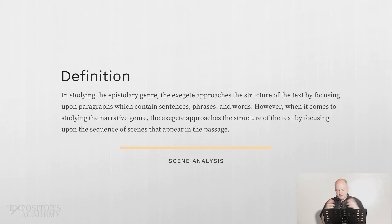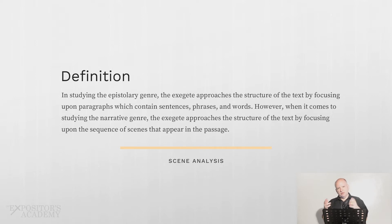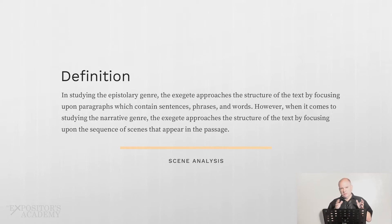As we continue our study of narrative genre, we now arrive at scene analysis. When you study the epistolary genre, you focus on paragraphs — we divided everything out in terms of paragraphs with sentences within them. But when you think about narrative, you don't think about paragraphs as much as scenes. That's how you have to approach the structure of a narrative passage: looking at the sequence of scenes that appear.